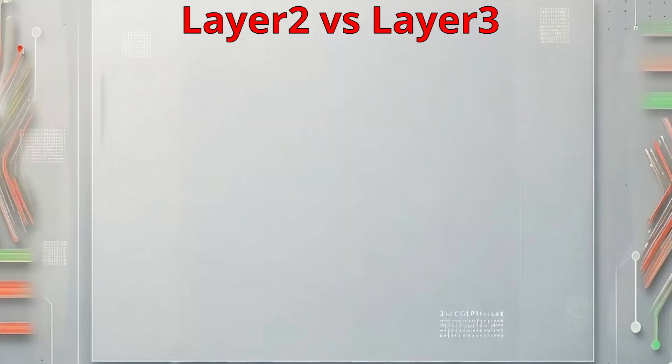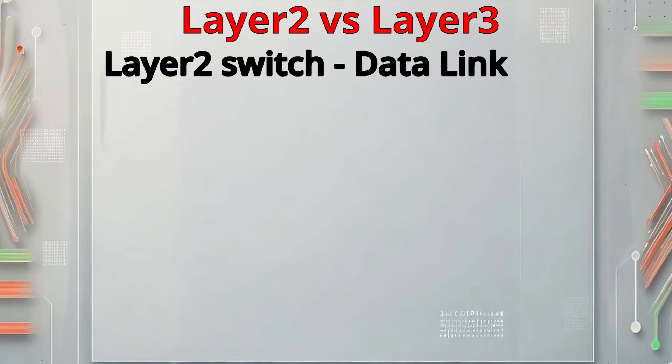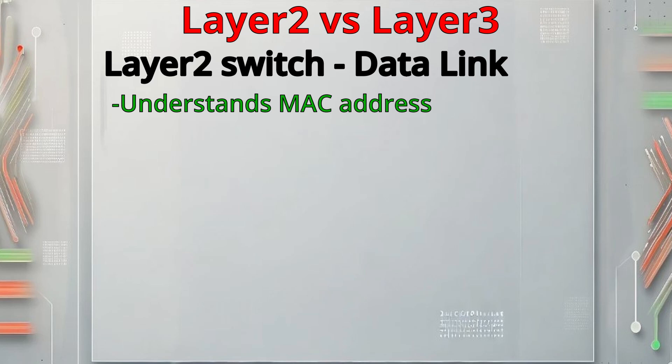Earlier, we discussed the difference between switches and routers. Switches come in two types: Layer 2 and Layer 3. Layer 2 switches operate at the second layer of the OSI model, which is the data link layer. This means the switch understands the connected end device's MAC addresses. At this level, data transmission is within frames, and the port used to send data to an end device is determined by that device's MAC address.